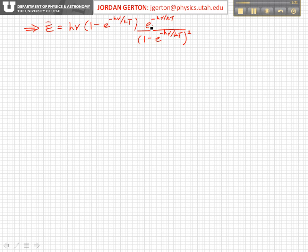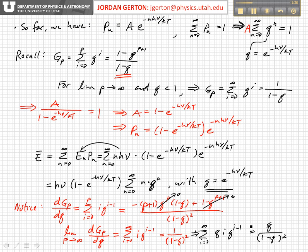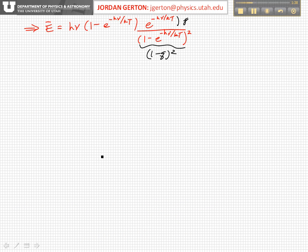Divided by 1 minus e to the minus h nu over kT squared. And this is just 1 minus q squared, as we wrote down right here. So now we can simplify this further. In particular, we notice that this term is the same as this term here, so we can cancel that term and one of those.